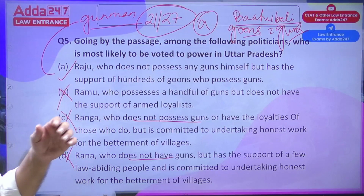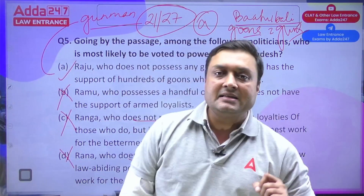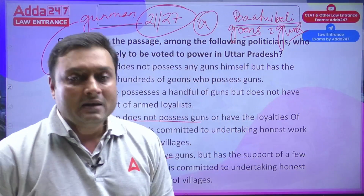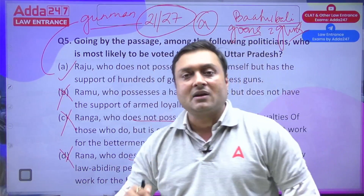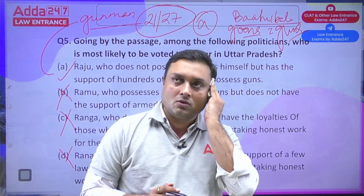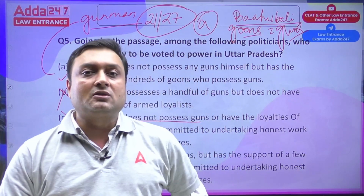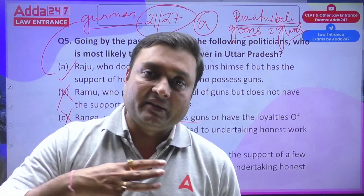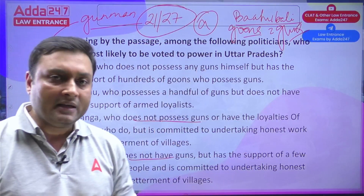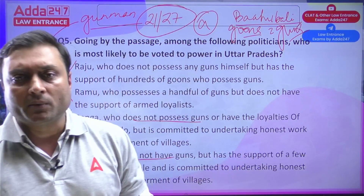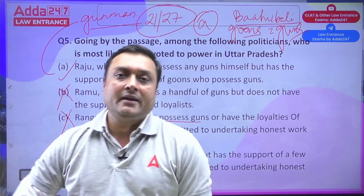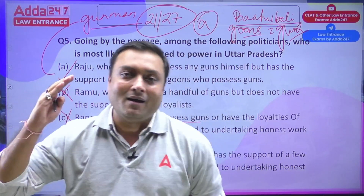Going by the passage, which politician is most likely to be voted to power? Option A — Raju: does not possess guns himself but has support of hundreds of goons who do. This aligns with the passage — the Bahubali model. Options B (Ramu: few guns, no support), C (Ranga: no guns, no loyalties), and D (Rana: no guns, few law-abiding supporters) are all eliminated. Answer is A. All five questions of this passage were very easy. Score: 21 out of 27.